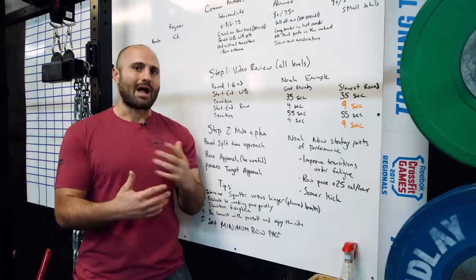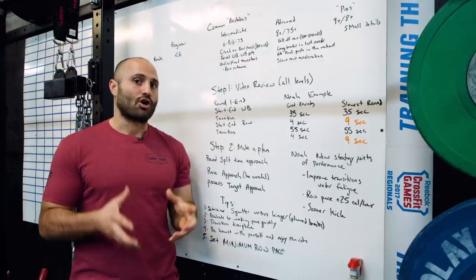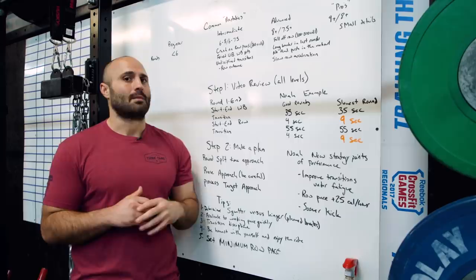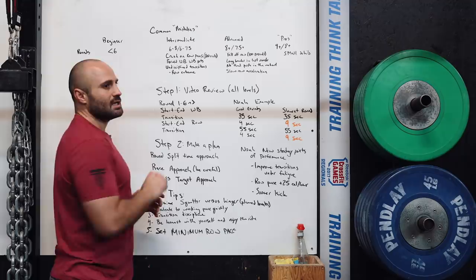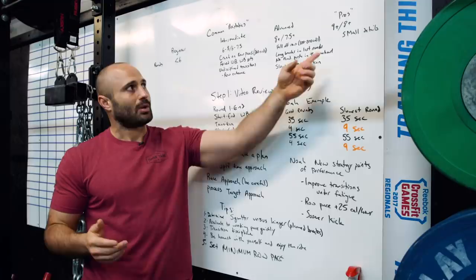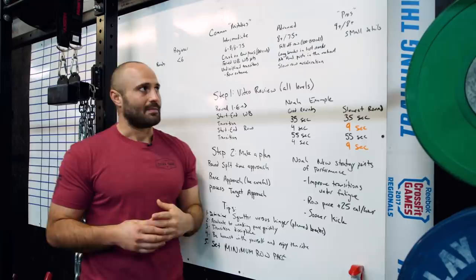For the workout, I'm breaking it into three major groups based on the data I currently have. As the leaderboard populates these could change, but these are my current best approximation. For intermediate athletes, I'm categorizing that for males somewhere between six and eight rounds, and for intermediate females somewhere between six and seven and a half rounds. For advanced athletes, eight-plus rounds for males, seven and a half-plus for females. For pros, nine-plus rounds for males, eight-plus for females.